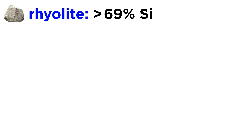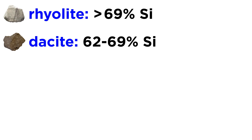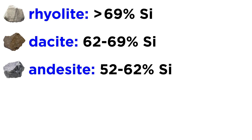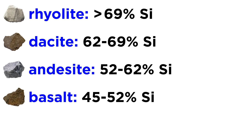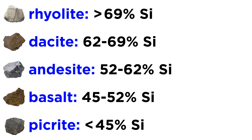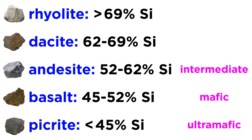With rhyolite, silica content is greater than 69%; dacite, 62–69%; andesite, 52–62%; basalt, 45–52%; and picrite, which contains less than 45% silica. The term ultramafic is commonly used to describe picritic rocks, mafic for basaltic rocks, intermediate for andesitic rocks, and felsic for dacitic and rhyolitic rocks.